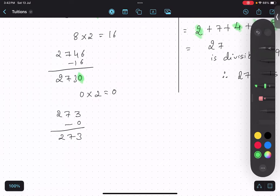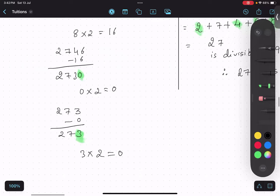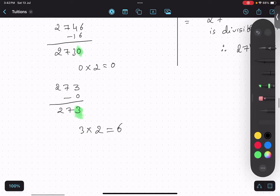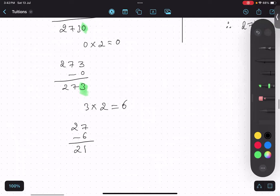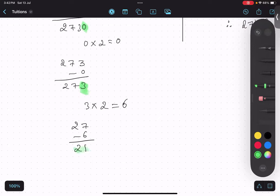Again we will take the last digit, double it—this should be 6—and subtract the remaining digits. Now is 21 divisible by 7? Yes.